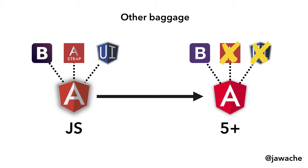UI Router gets absorbed into Angular with the Angular Router. We might also be using things like Angular Strap in AngularJS, which we just drop or replace in Angular 5. Then there are other dependencies — usually UI dependencies. For example, Bootstrap: the two Bootstrap logos on screen are actually slightly different — the left one is Bootstrap 2 (used with AngularJS) and the right one is Bootstrap 4 (used with Angular 5).